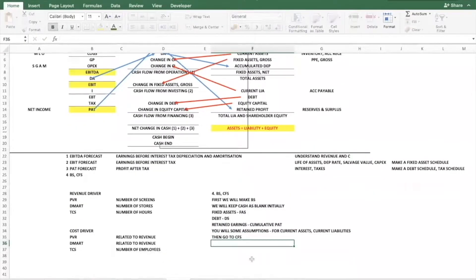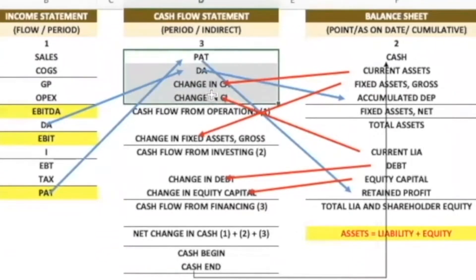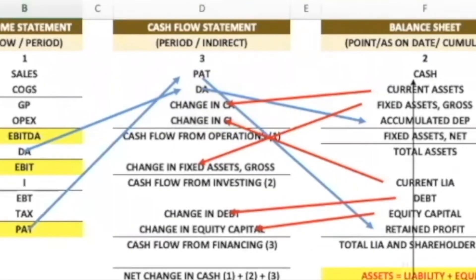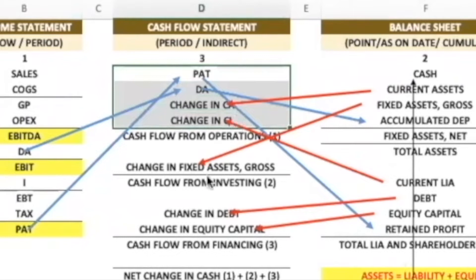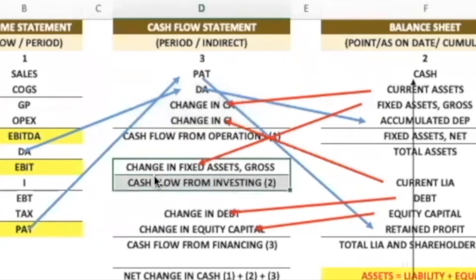Then we go to the cash flow statement — everything in it is linked from somewhere else. In cash flow from operating activities, PAT and depreciation come from the income statement, and the change in working capital comes from the balance sheet. In cash flow from investing activities, it is the capex part, which comes from the balance sheet or fixed asset schedule — the more fixed assets you purchase, the higher the capex and the larger the investing outflow.